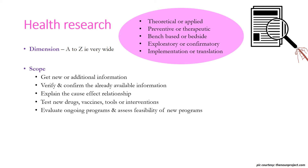So why do we do research in medical science? To get new or additional information, to verify and confirm already available information, to explain the cause-effect relationship, to test new drugs, vaccines, tools or interventions — the best example of which is the COVID-19 pandemic — and to evaluate ongoing health programs and assess the feasibility of new programs.